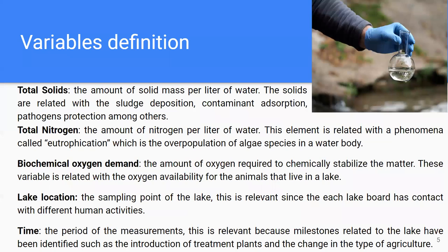For variable definition, we have total solids, which is the amount of solid mass per liter of water. This is relevant because solids are related to sludge deposition and pathogen protection, among others. We have the total nitrogen variable, which is the amount of nitrogen per liter of water. It is related to a phenomenon called eutrophication, which is the overpopulation of algae species in a water body, which tends to sequester all the available oxygen, affecting fish that live in the water body.